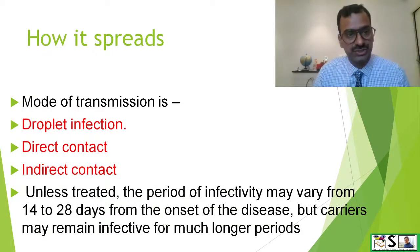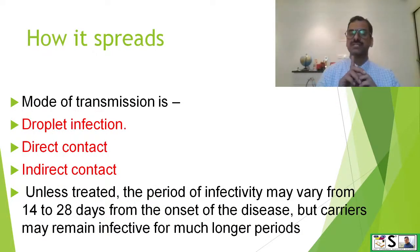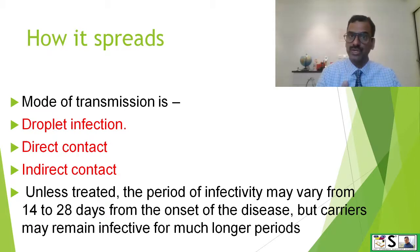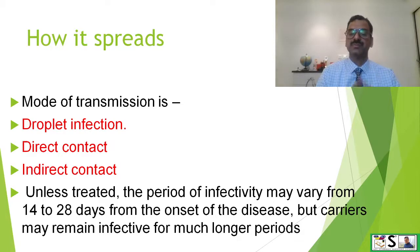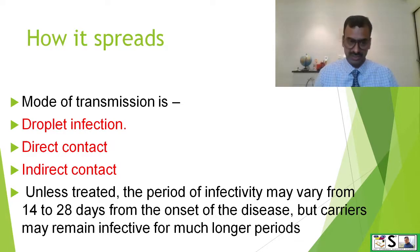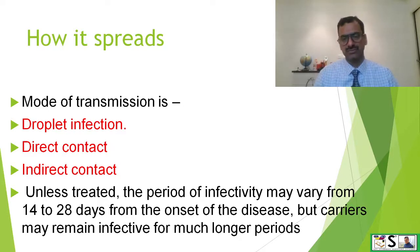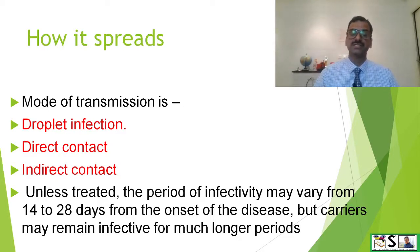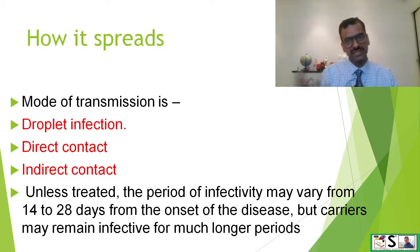The mode of transmission is droplet infection, direct contact, and indirect contact. Unless treated, the period of infectivity may vary from 14 days to 28 days from the onset of disease. But carriers remain infective for a longer period — till they are a carrier they may spread infection.